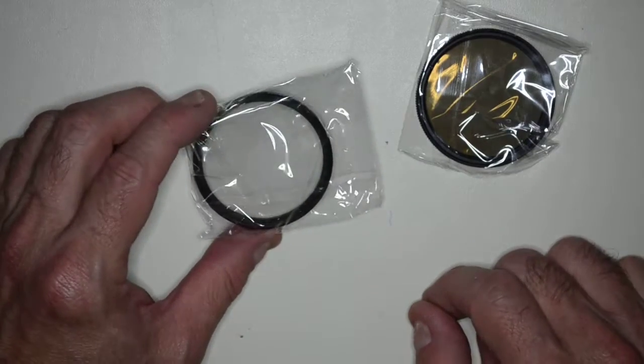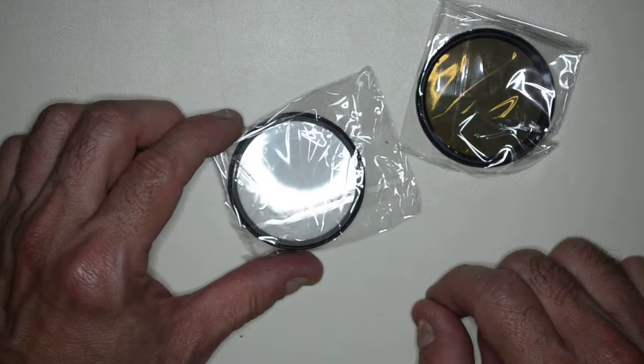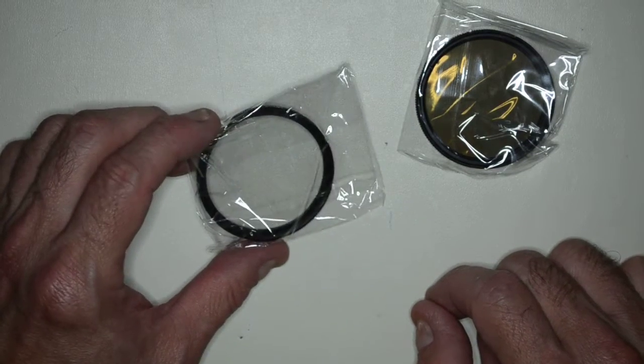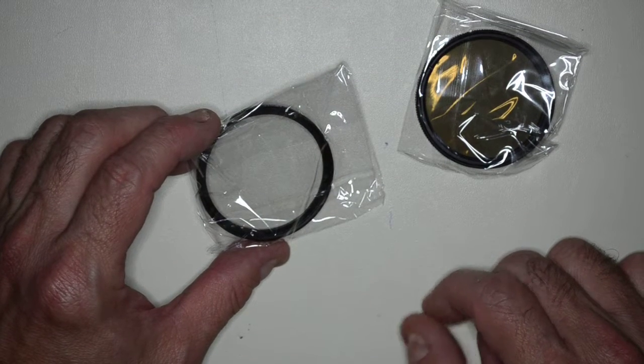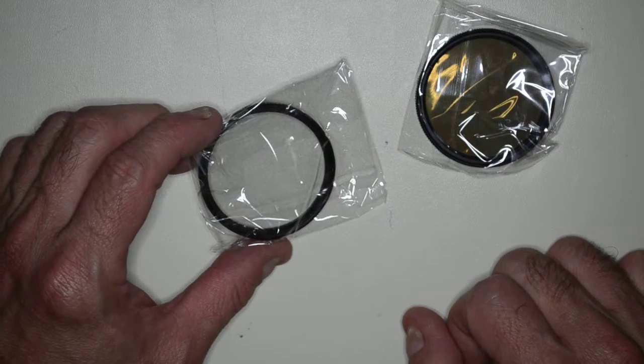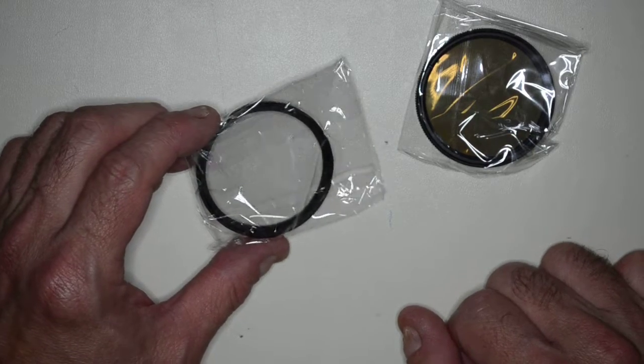The UV filter basically blocks ultraviolet light, and it's not a bad idea to have this on just as protection against dropping the lens and cracking the outer lens. Whatever is the most outside lens usually cracks first.